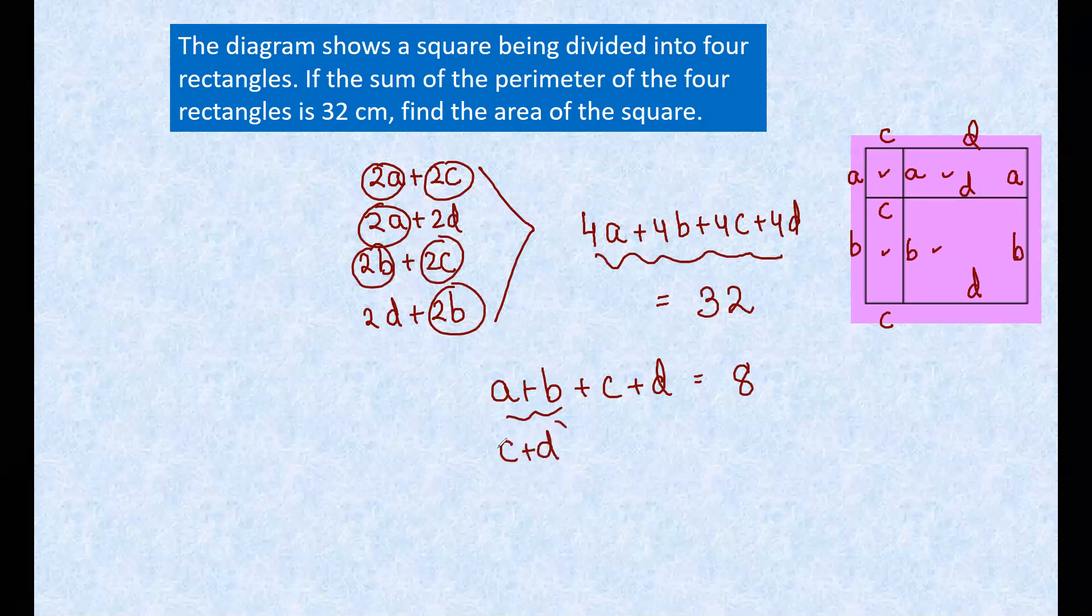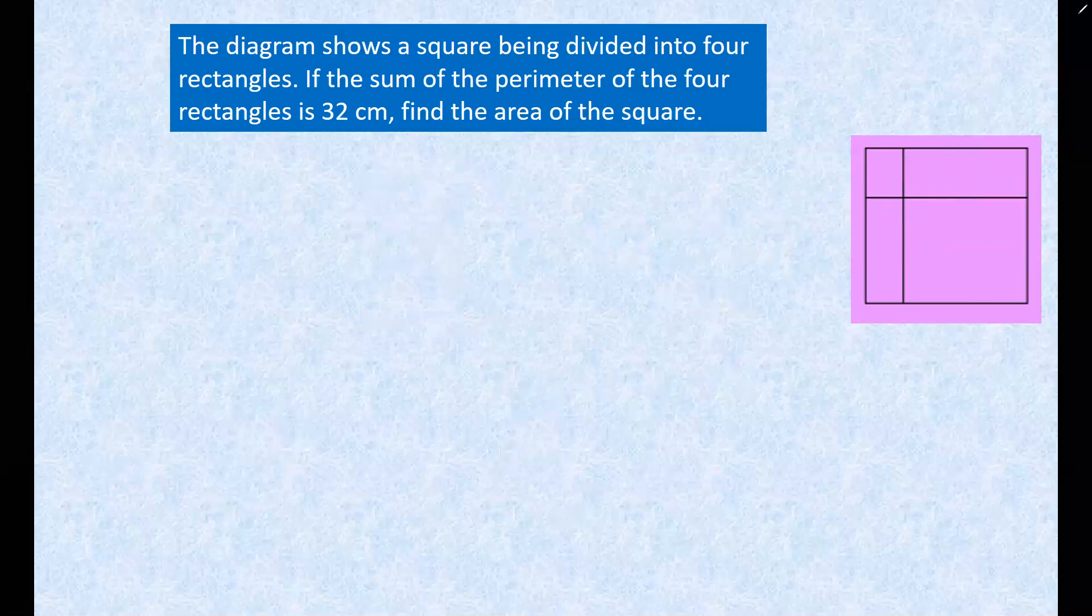So we can write c plus d twice equal to 8. Why are they equal? Because it is given it is a square. So c plus d is 4. Now we can find the side of the square as 4, so area will be 4 squared, which gives you 16 centimeter square. This can be visualized also very well with little practice, and you can directly go to the solution.